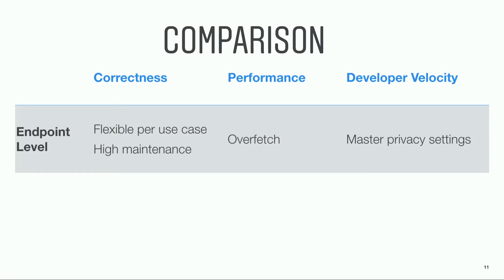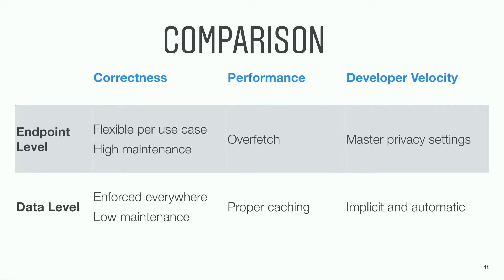Comparing the two approaches: for endpoint-level design, it is flexible but also high maintenance, relies on the developer to do the correct thing, overfetch is probably required for ranked data, and it doesn't really help developer velocity. For data-level design, it is enforced everywhere, so it should be low maintenance. We could resolve the multiple fetch by having a proper cache, and because it is implicit and automatic, it is risk-free for most developers. With hundreds of engineers at Instagram, we decided to go with data-level privacy check for correctness and developer velocity.